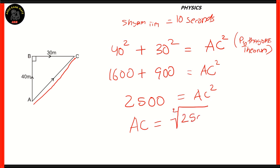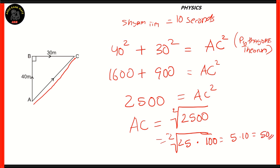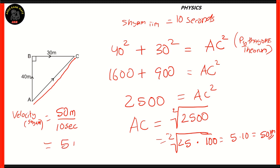So we get 2500 = AC². Taking the square root of both sides: the square root of 2500 can be written as the square root of 25 times the square root of 100, which is 5 times 10, equal to 50. So Shyam traveled 50 meters. The velocity of Shyam is 50 meters divided by 10 seconds, which gives 5 meters per second.